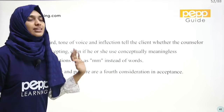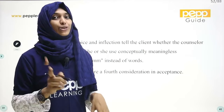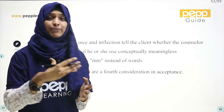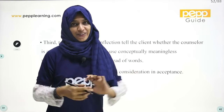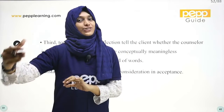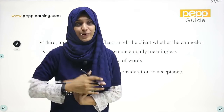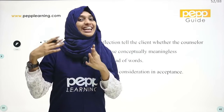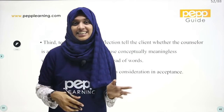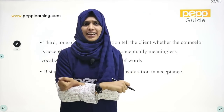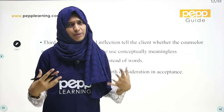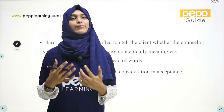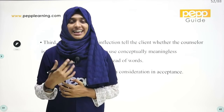Distance and posture are the fourth consideration of acceptance. You should keep a minimal distance between yourself and your client so the client is comfortable. You also need an open posture — not cross-legged or cross-armed. An open posture helps the client feel accepted.